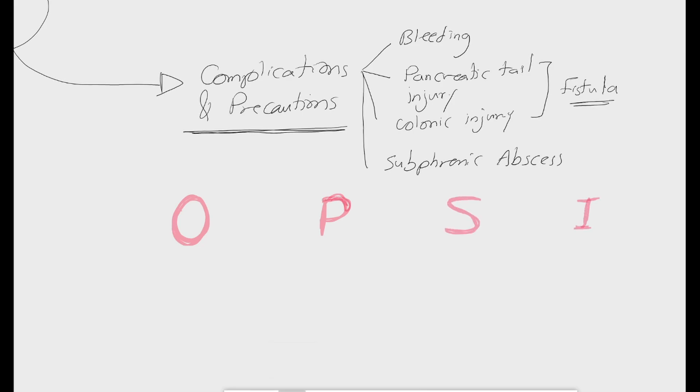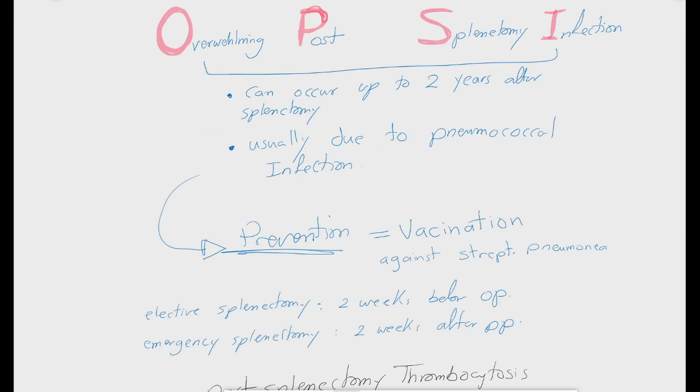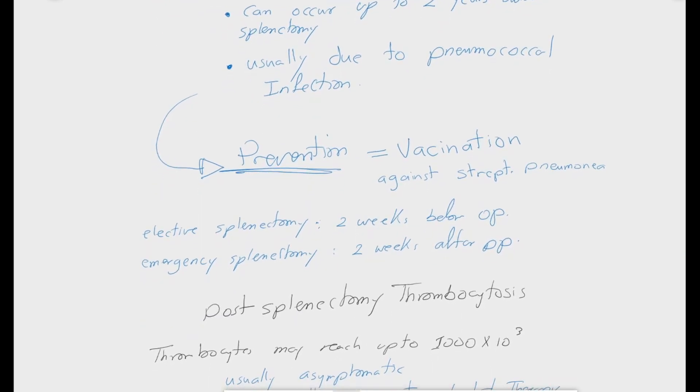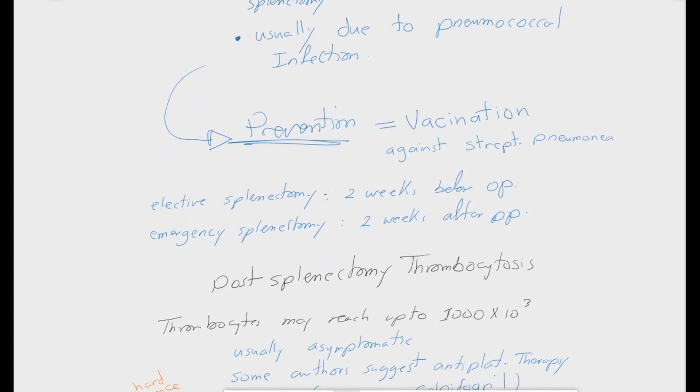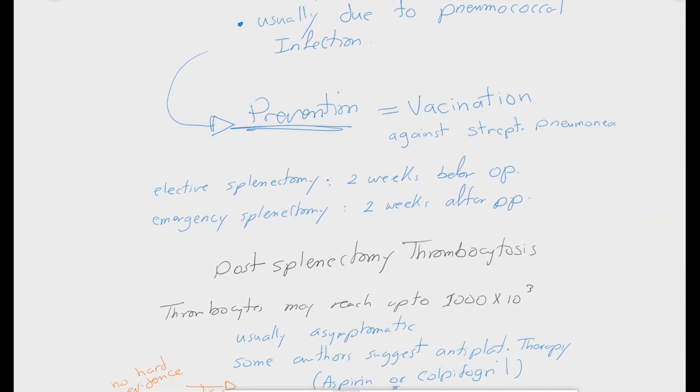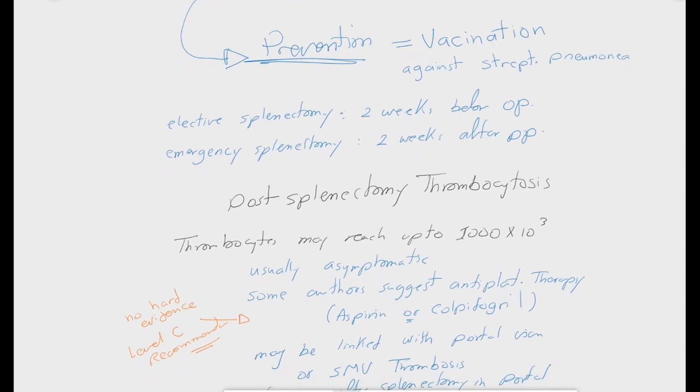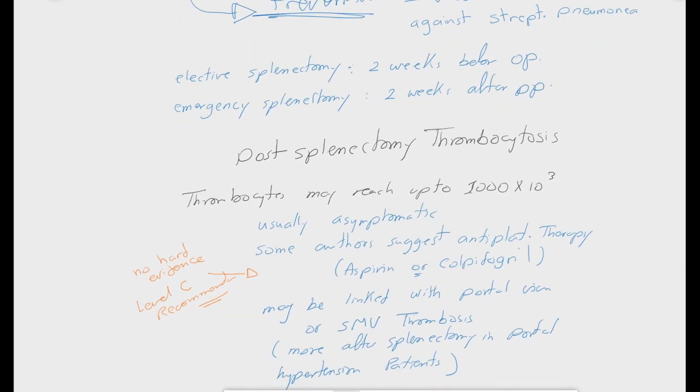The most feared complication of splenectomy is OPSI, which stands for Overwhelming Post-Splenectomy Infection. It can occur up to 2 years after a splenectomy, usually due to pneumococcal infection. As it is challenging to treat, prevention is the best way. This means vaccination against streptococcal pneumonia, ideally 2 weeks before an elective splenectomy. But after emergency splenectomy, the vaccination must be performed 2 weeks after the operation.